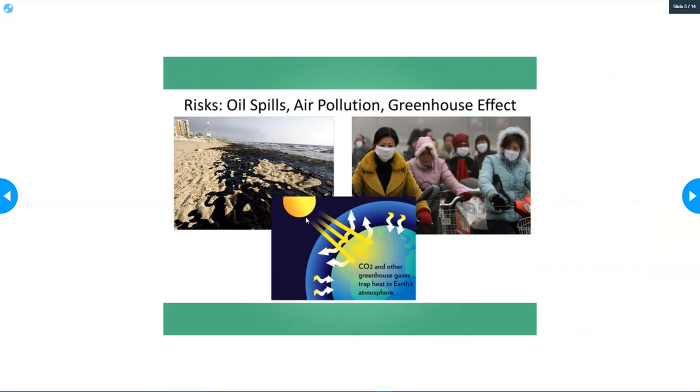When you burn coal and oil, you have CO2 that gets released into the atmosphere. Normally our sun radiates heat down to the earth and then we release some of it back into space, but when you get CO2 trapped in the atmosphere that heat can't escape. So we're trapping more and more heat on the earth, which is causing our earth to heat up.